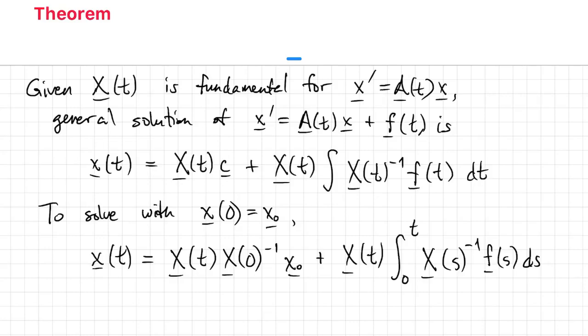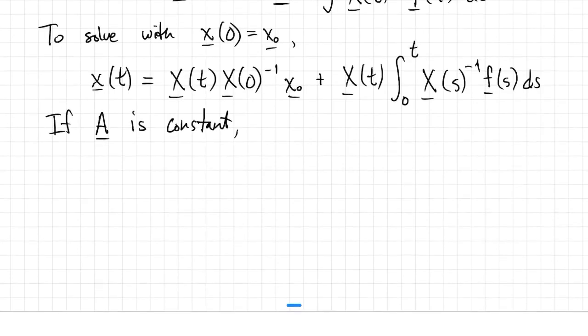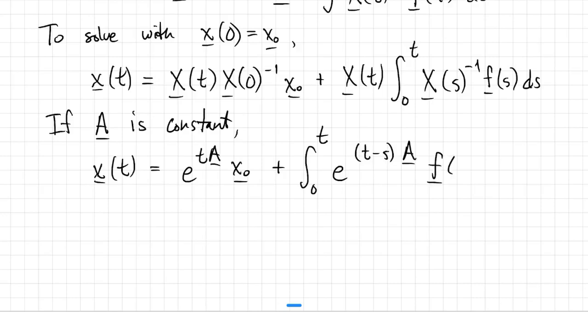Finally, if the matrix A is actually constant, then we know that the matrix exponential is a fundamental matrix. And if we use that, we get the formula X of T is e to the TA times X_0 plus integral from 0 to T of the exponential of T minus S times A all times F of S dS.